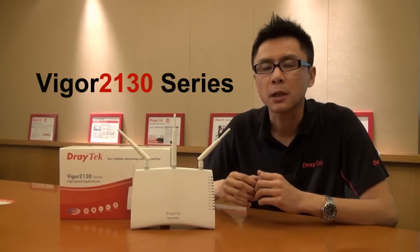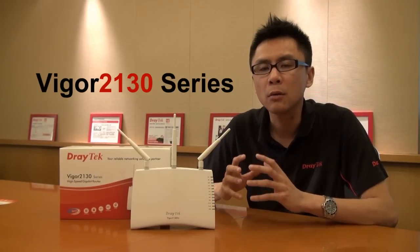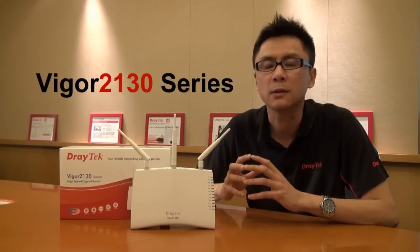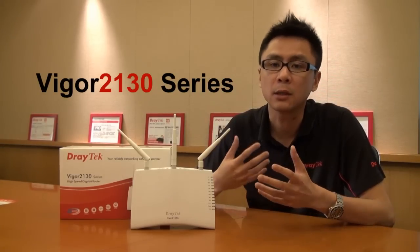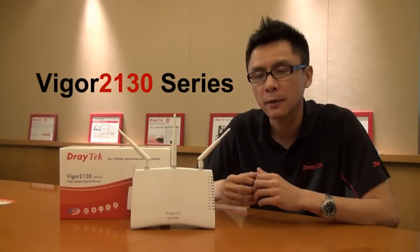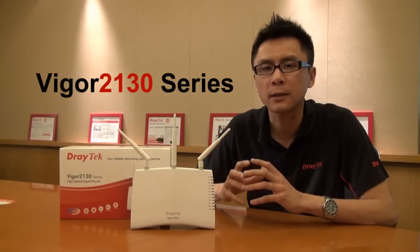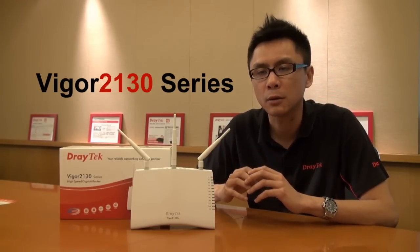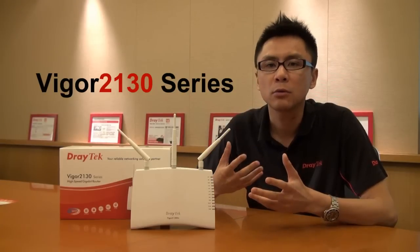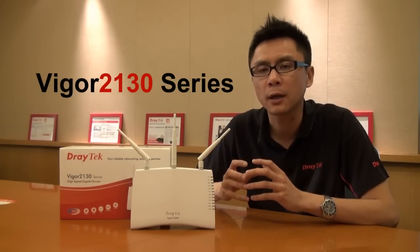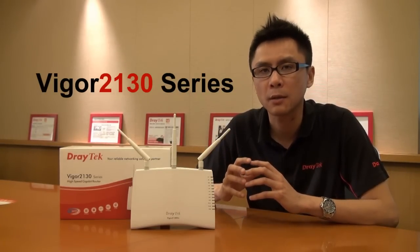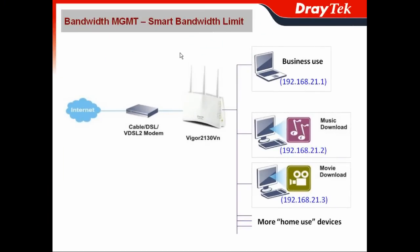The Smart Bandwidth Limit function helps you set up your most essential device — meaning reserved bandwidth for that device — while other devices follow Smart Bandwidth rules. This saves you a significant amount of time on configuration steps. In the bandwidth management section, we now move to a scenario to show how to use the Smart Bandwidth Limit feature.